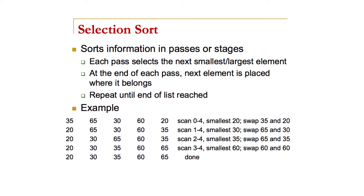A selection sort sorts information in different passes. Each pass finds the next smallest or largest element, and at the end of the pass we swap that value into its proper place, then repeat until we reach the end of the list. In the first pass, we're fixed on index 1 with the number 35. We want to find the smallest value in the list for that first index. We compare 35 to 65 — 35 is still smaller. Then 35 to 30 — 30 is smaller, so 30 becomes the candidate. Then 30 to 60, and finally 30 to 20 — 20 is less than 30, so 20 becomes the value to swap.